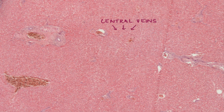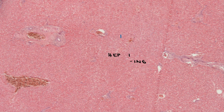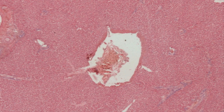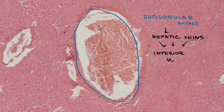Central veins join up and create sublobular veins, which drain into hepatic veins. We can see sublobular veins in this section and can also see that they are basically alone, not accompanied by any other structure. We can see a sublobular vein with its tributaries and a bigger sublobular vein. They join and create hepatic veins, which then enter the inferior vena cava.